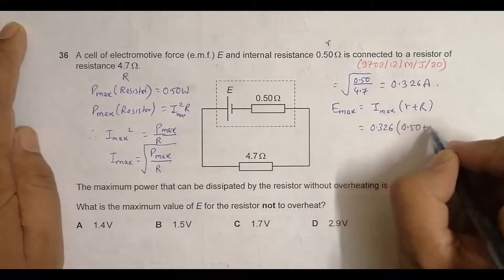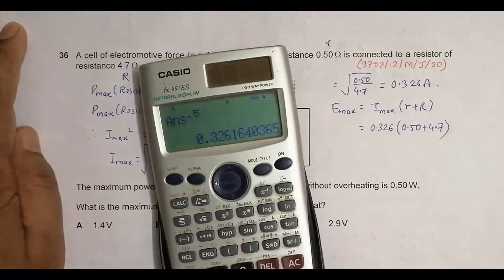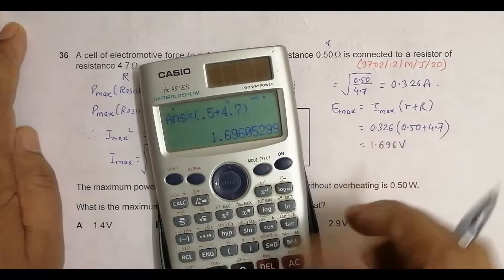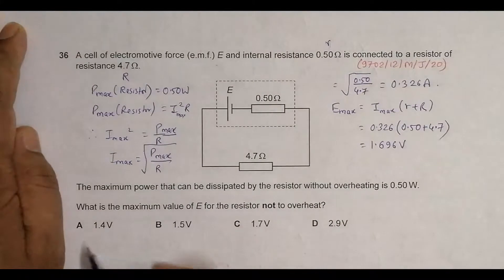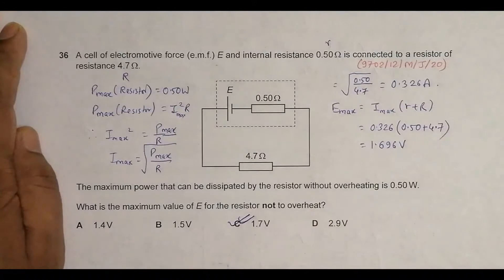Times 0.50 plus 4.7. Inside the bracket, 0.5 plus 4.7 equals 5.2. So it comes to be equal to 1.696 volts, and the answer which is closest to this is choice C. Choice C should be the correct choice.